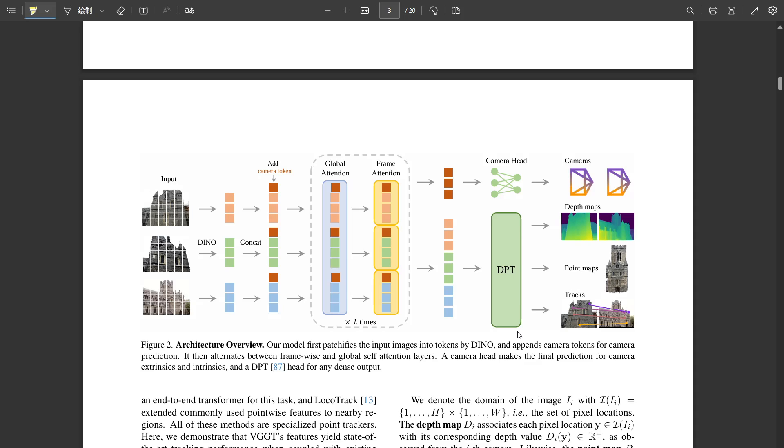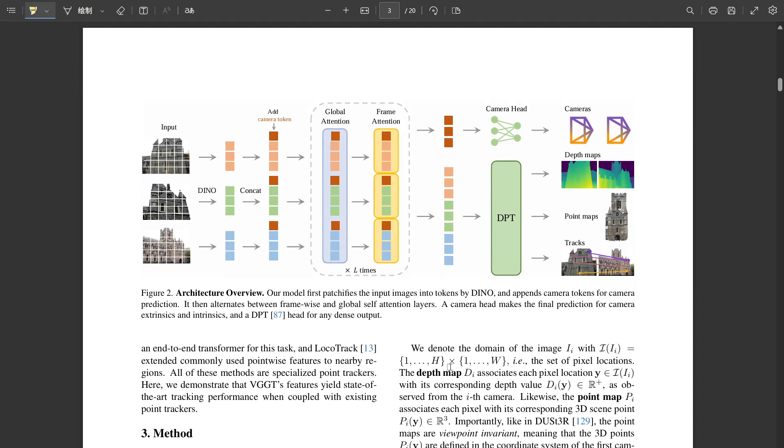But wait, aren't some of those outputs a bit redundant? Like, if you have the camera pose and the depth map, you can calculate the 3D point map geometrically, can't you? You absolutely can. And that's one of the most interesting findings they highlighted. Training the network to explicitly predict all of these things, even with that redundancy, actually makes the overall performance better. Really? How so? It seems forcing the network to satisfy all these related geometric constraints simultaneously leads to a better, more robust underlying representation in the shared transformer backbone. Their experiments showed if you remove, say, the depth loss or a camera loss during training, the accuracy of the point map prediction actually goes down. Huh, so the redundancy helps it learn a more complete geometric understanding. That's counterintuitive but cool. It really is. It suggests it's learning a holistic view, not just isolated tasks.